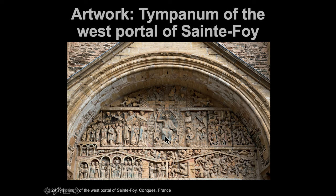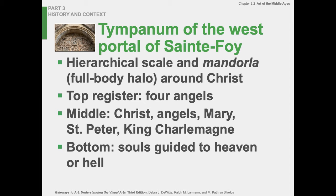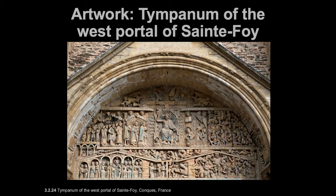Here we have our image of the west portal with our beautiful arch and voussoirs. We have hierarchical scale: the top registers show the four angels; the middle shows Christ, Mary, St. Peter, and King Charlemagne — Charlemagne was a French king. Then the bottom shows the souls guided to heaven or hell. There's a decisive factor: this would be hell over here. Usually in Christianity, hell is on the left side — the left hand of God — even the apostle on the left side of Christ would be Judas.